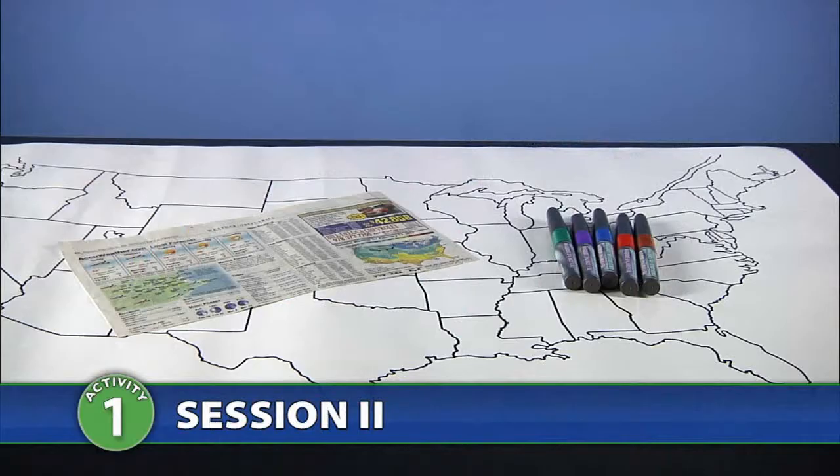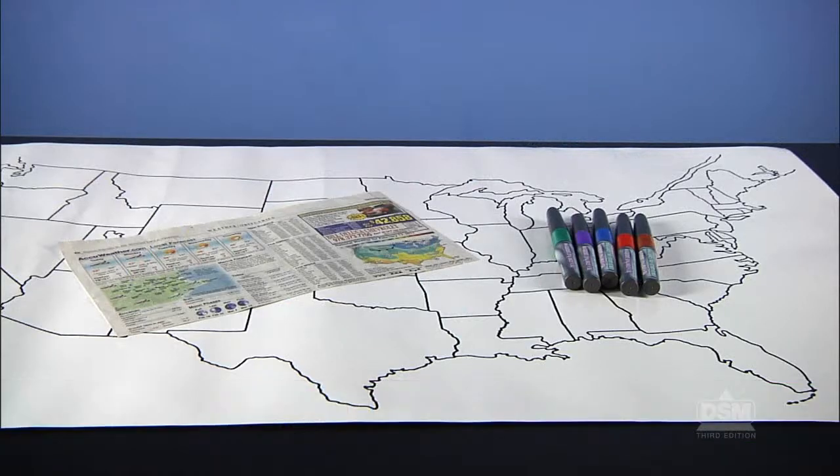To prepare for Session 2, you will need a National Weather page, the laminated outline map of the United States, and erasable markers.